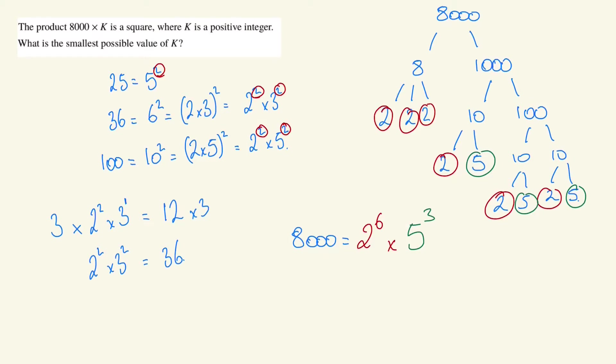How do I make this a square number? Well, recall we need an even number of prime factors. 2 appears 6 times, 5 appears 3 times. I need to multiply this by 5 on both sides of the equation, because now I can write the right side as 2 to the 6 times 5 to the 4. That has to be a square, because this is nothing else than 2 cubed times 5 squared, all squared.